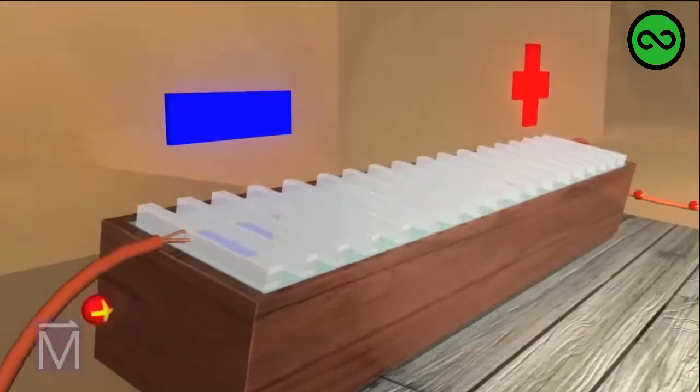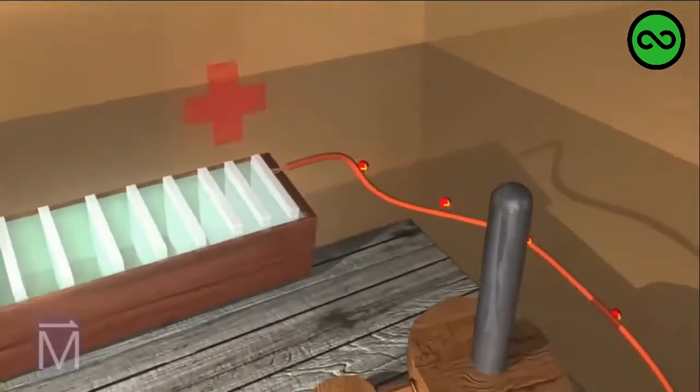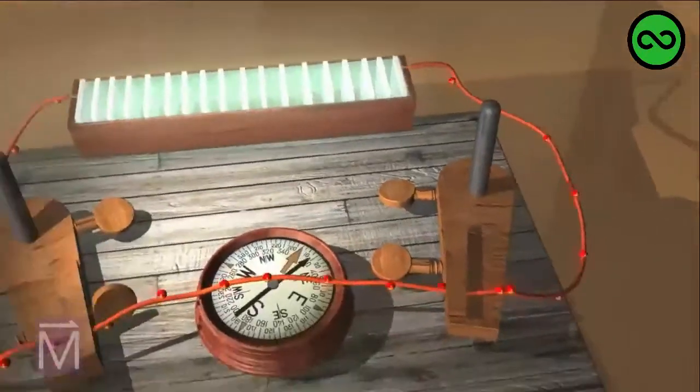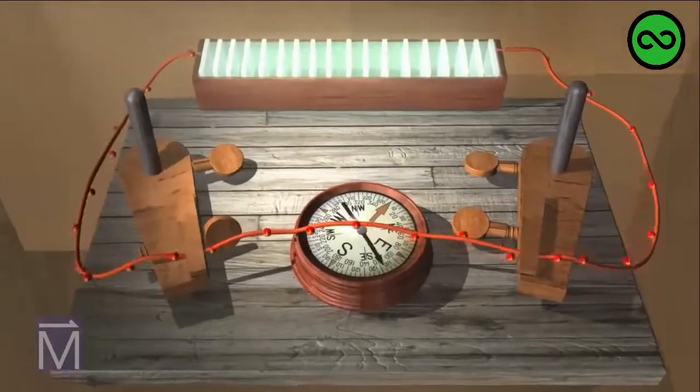If you reverse the direction of the current, then the magnetic field around the wire moves in the opposite direction, and the needle on the compass flips to reflect the change in field.